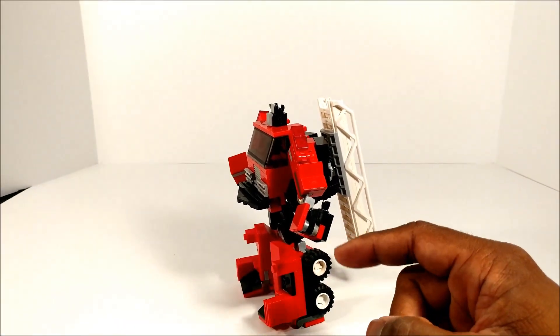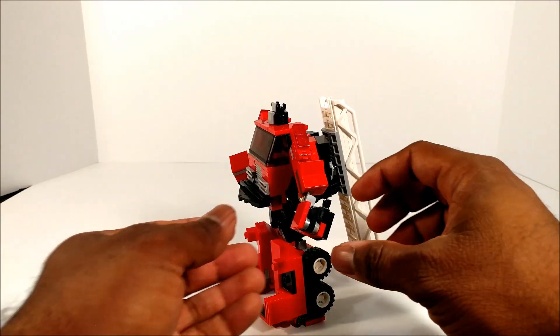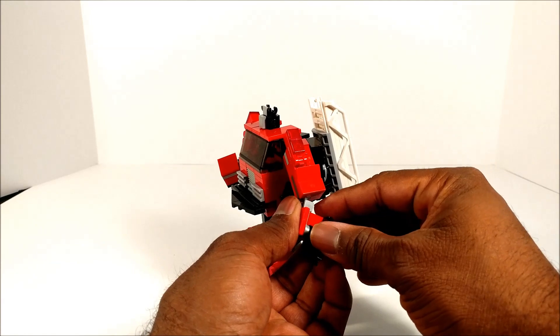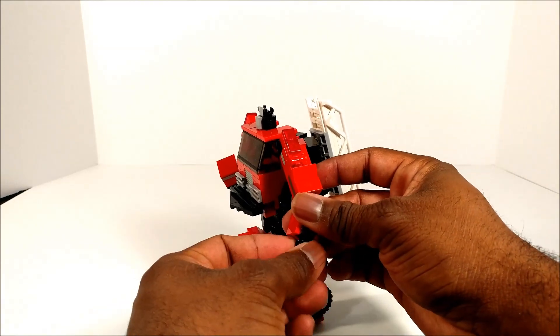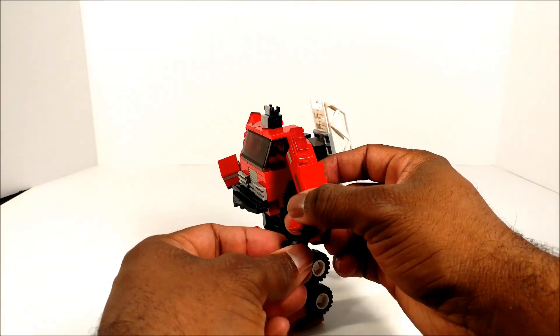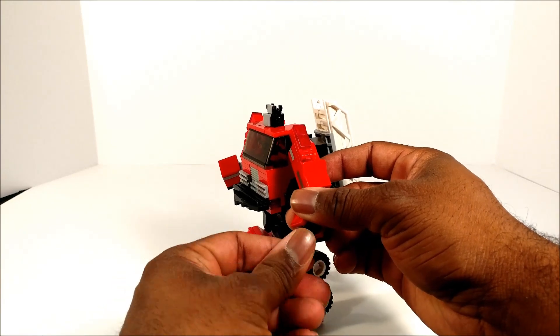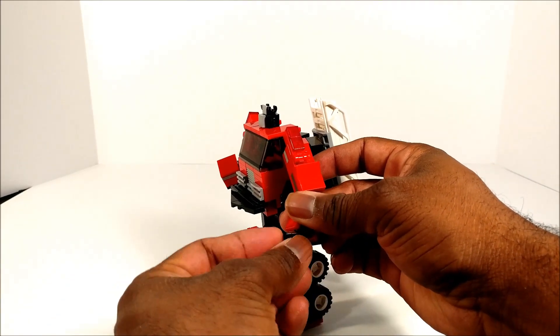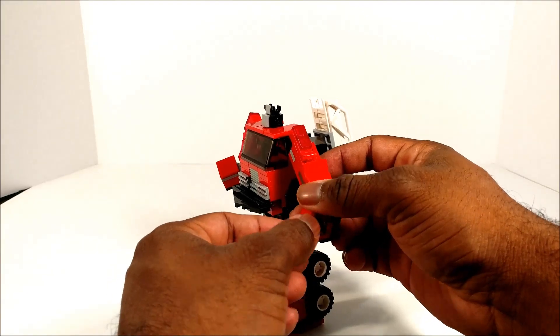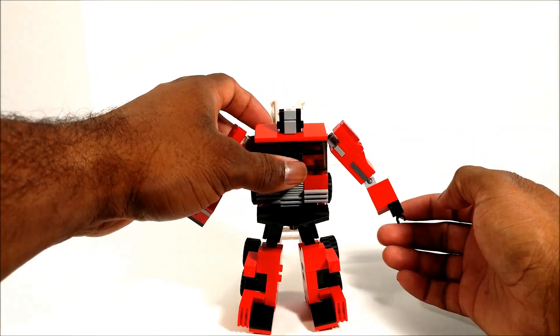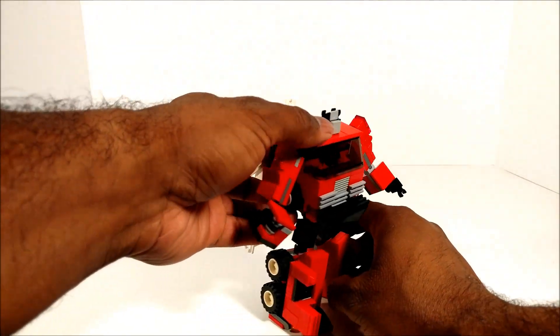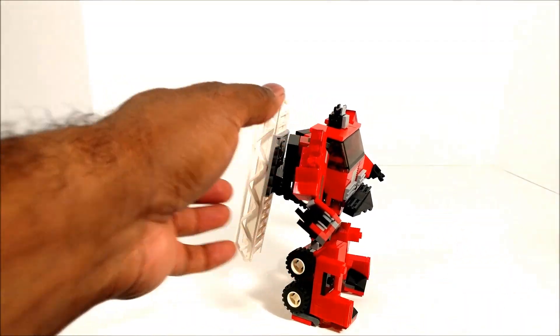Then with the wrist here, you have a series of clips and hinges and stuff, so kind of just rotate out on that, bring that up, rotate the hand like that, and then bring it up so it's kind of flush with the forearm right there.